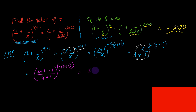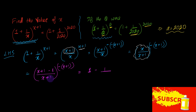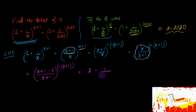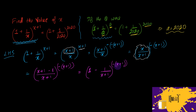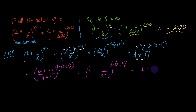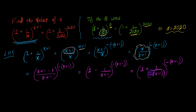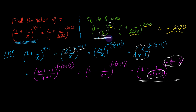So (x+1)/(x+1) becomes 1, giving us (1 - 1/(x+1))^(-(x+1)). We are getting closer to our solution. This can be written as (1 + 1/(-(x+1)))^(-(x+1)). What we observe here is that -(x+1) appears both in the denominator and in the power — matching the form (1 + 1/a)^a.